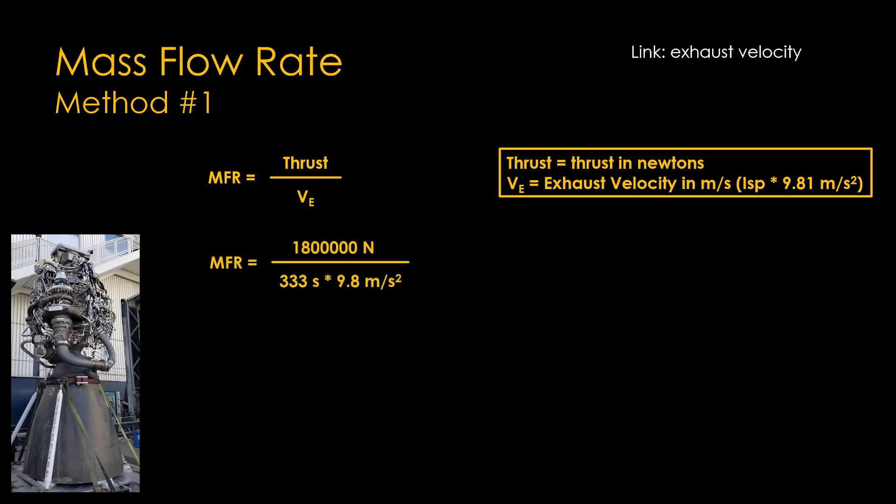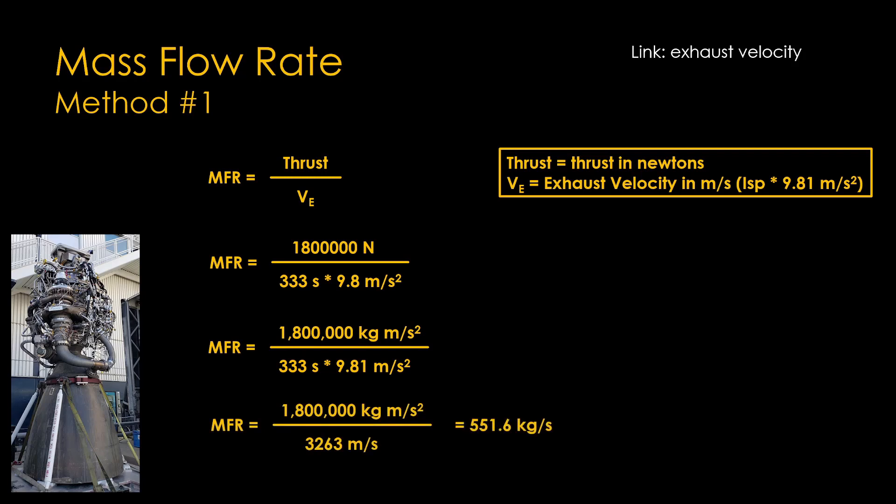Using the Raptor as an example, it has a thrust of 1,800 kilonewtons, or 1.8 million newtons, though that's hard to nail down as the engine is still under development. It has an ISP of about 333 at sea level. Doing some math and canceling out the units, and we determine that a Raptor with 1,800 kilonewtons of thrust uses 551.6 kilograms of propellant each second.